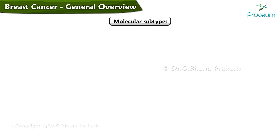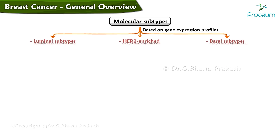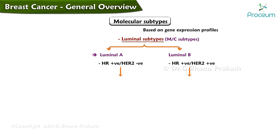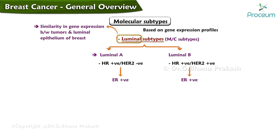Based on gene expression profiles, molecular subtypes have been identified. The luminal subtypes are characterized as luminal A and luminal B. They are the most common subtypes of breast cancer and make up the majority of estrogen receptor-positive breast cancers. The name luminal derives from a similarity in gene expression between these tumors and the luminal epithelium of the breast. They typically express cytokeratins 8 and 18.